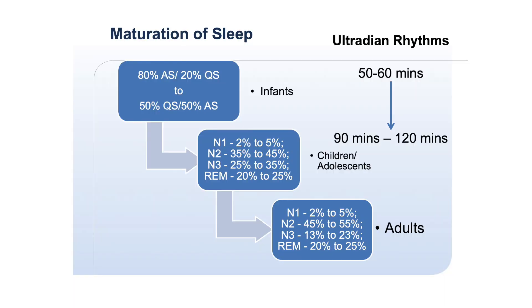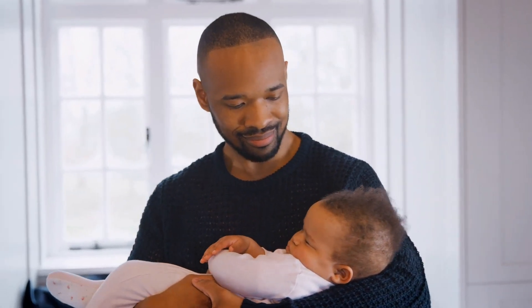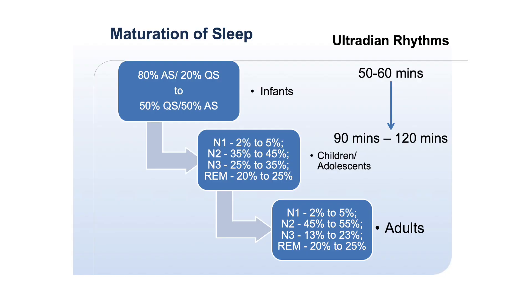By the age of three months, more distinct sleep staging develops and includes non-REM 1, non-REM 2, non-REM 3 or slow-wave sleep, and REM sleep. In early childhood, cycling through these stages still occurs about every 50 to 60 minutes, with the first bout of REM occurring towards the end of that time, whereas the older child to adult will cycle every 90 to 120 minutes.